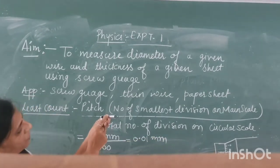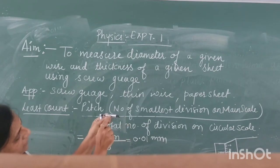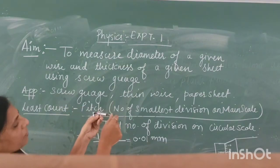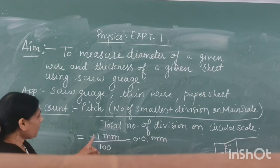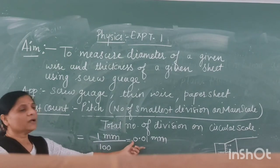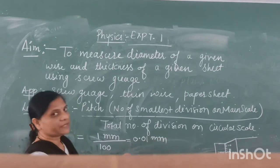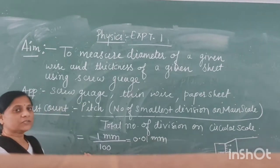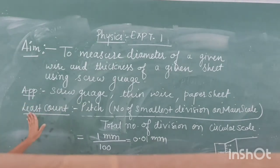Students, the circular scale starts from 0 and ends at 100. So 1 divided by 100 gives 0.01 millimeter as the least count of the screw gauge.